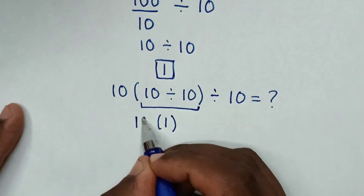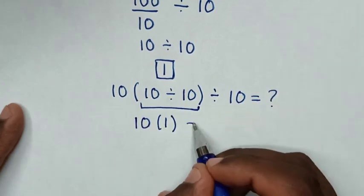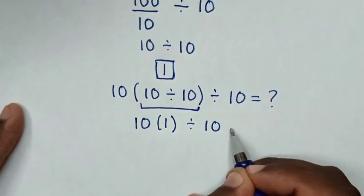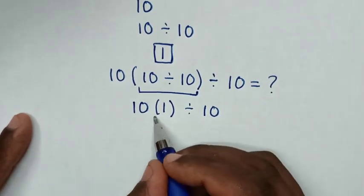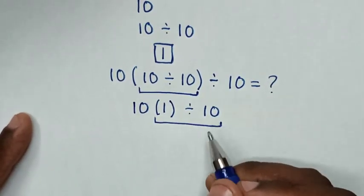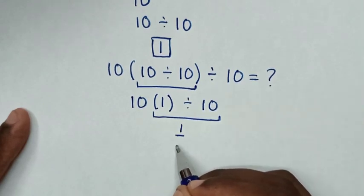Then here before was 10, then divide by 10. So 10 divided by 10 is 1 over 10.